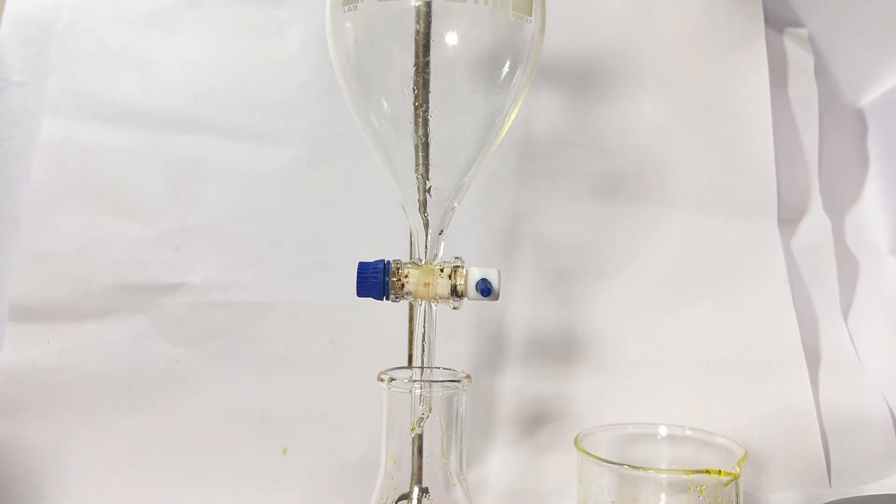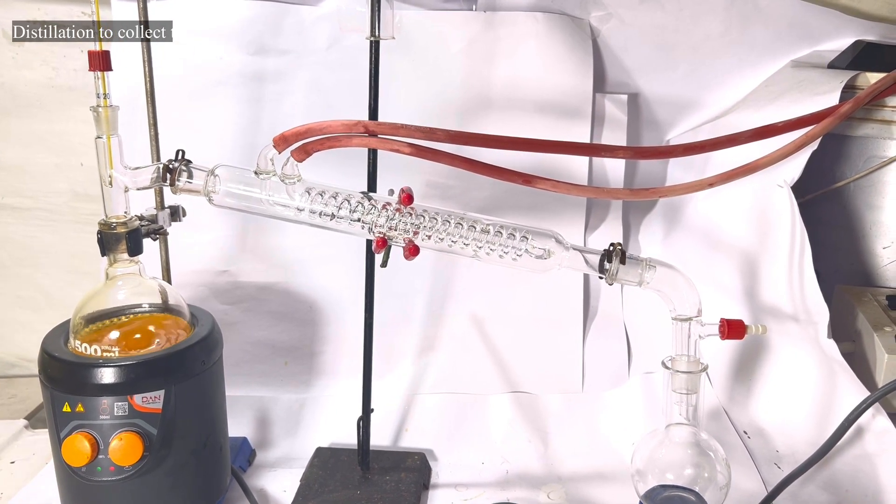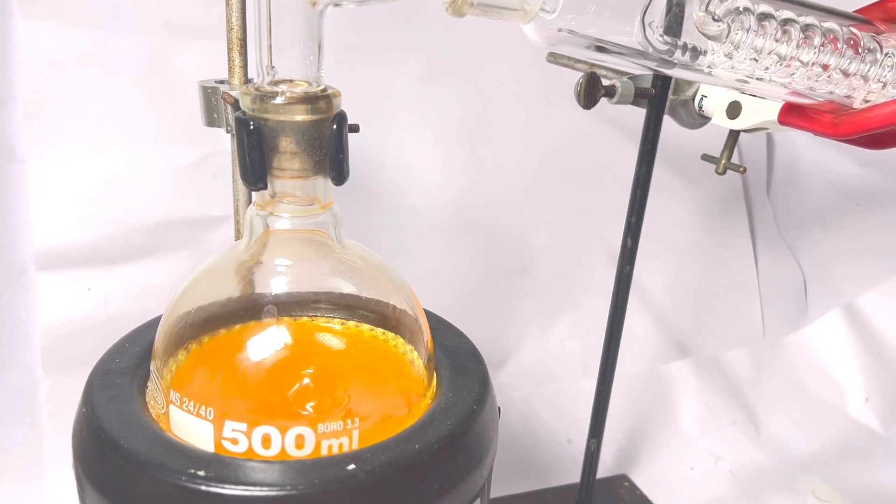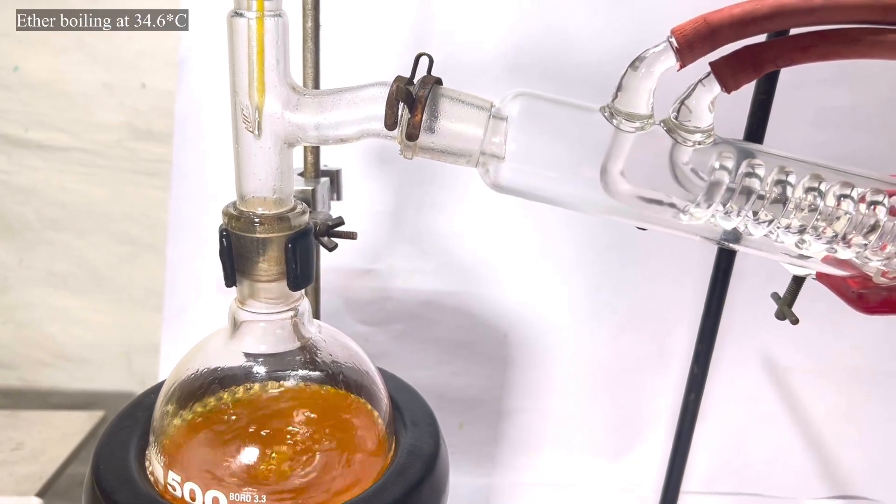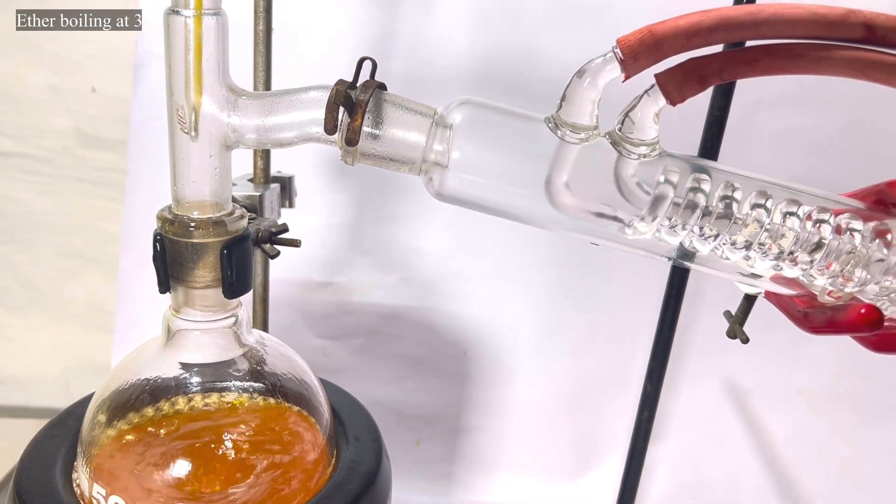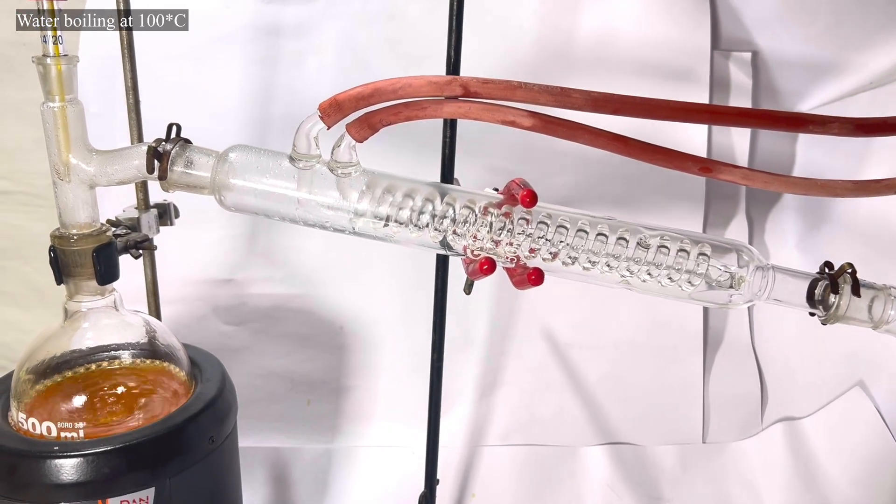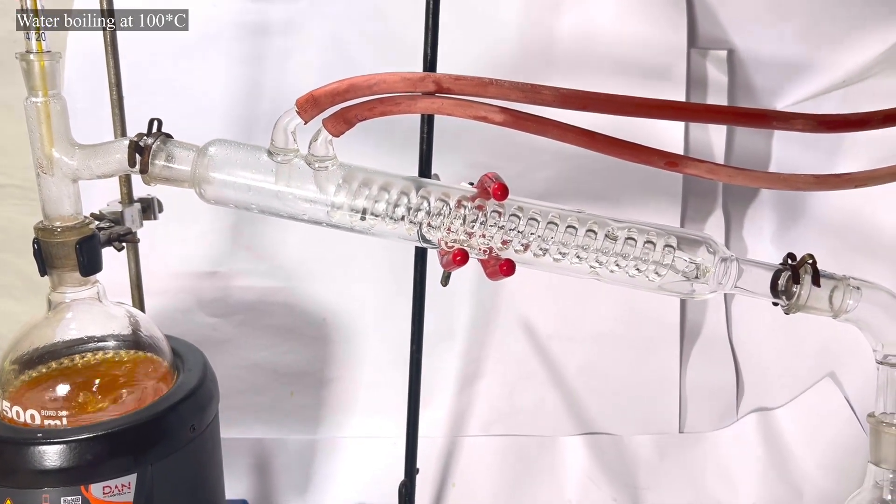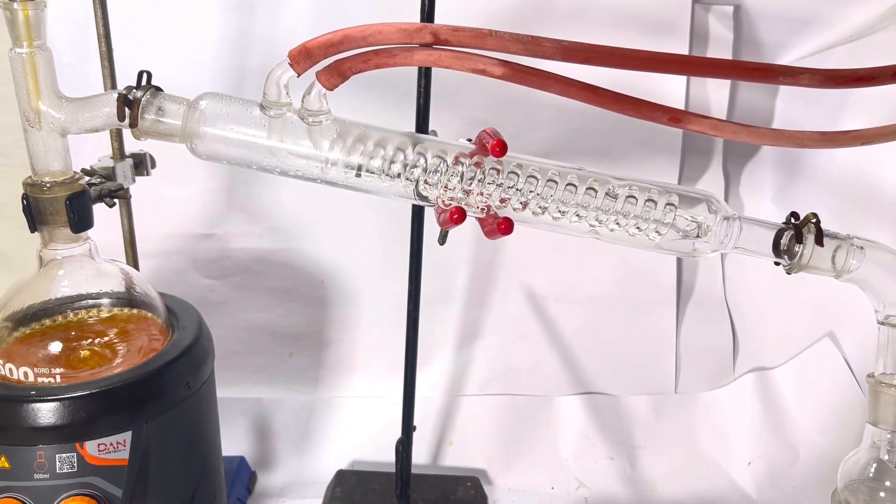Finally the flask containing cinnamaldehyde, benzaldehyde, diethyl ether and some water was set for simple distillation. Initially diethyl ether starts to boil and condenses at 34.6 degrees C. After all the ether has passed over, the temperature spikes to 100 degrees C in the thermometer and the residual water starts to pass over the condenser.